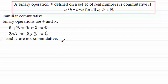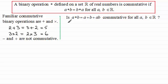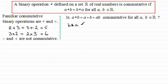Now you may be asked to show that a particular binary operation is commutative. For example: is the binary operation star defined by a star b equals a plus b plus ab commutative for all members a and b of the set of real numbers? To do this, let's start by computing b star a and see if we can prove it's exactly the same as a star b.